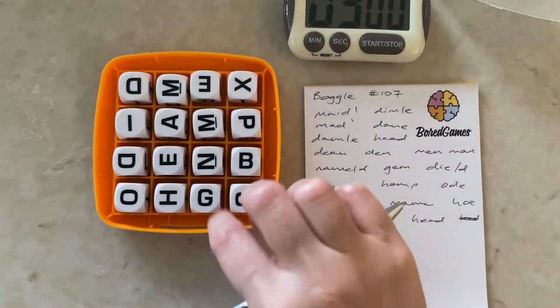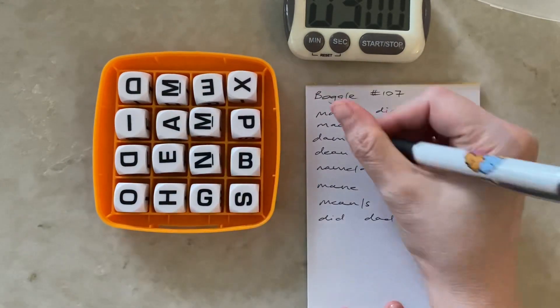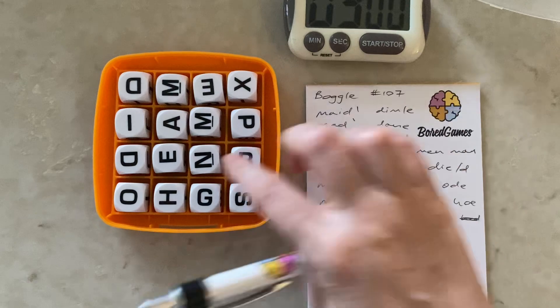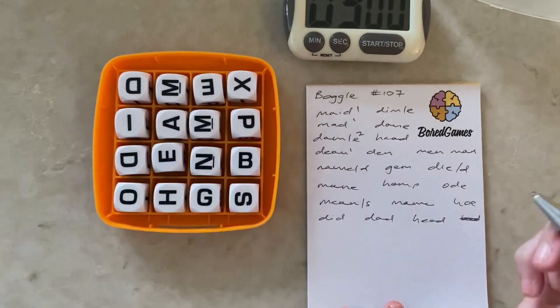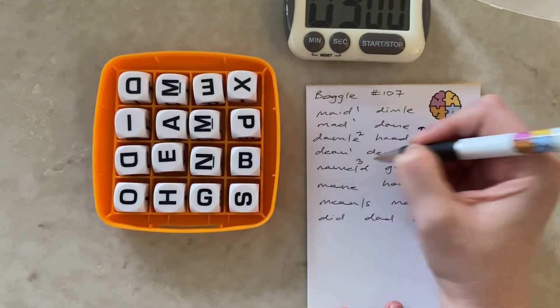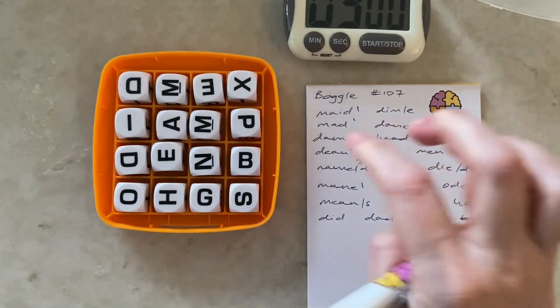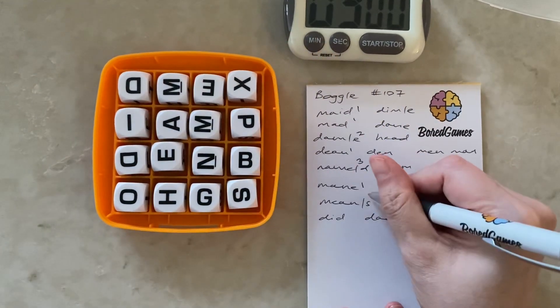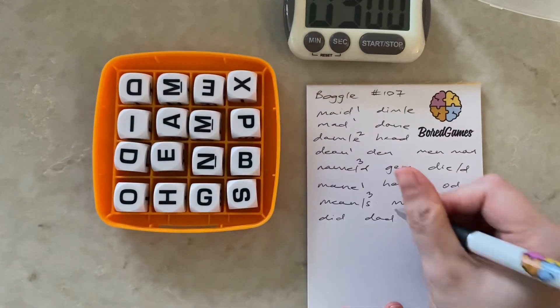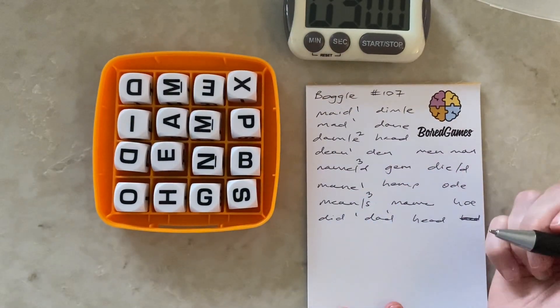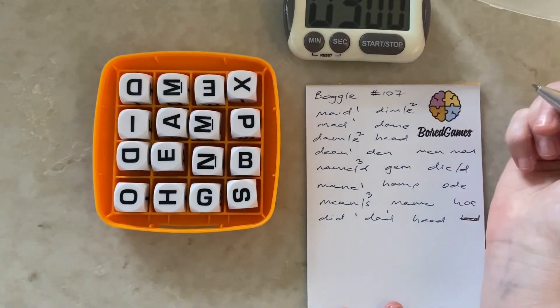Dean, name and named. Had to think about that one. Main, mean and means, did and dad, dim and dime, Dane.